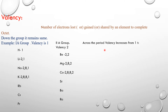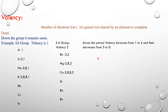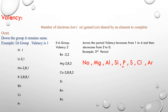Across the period, the valency increases from 1 to 4, and then decreases from 3 to 0. Remember the trendy periodic table — consider the third period: sodium, magnesium, aluminum, silicon, phosphorus, sulfur, chlorine, and argon.